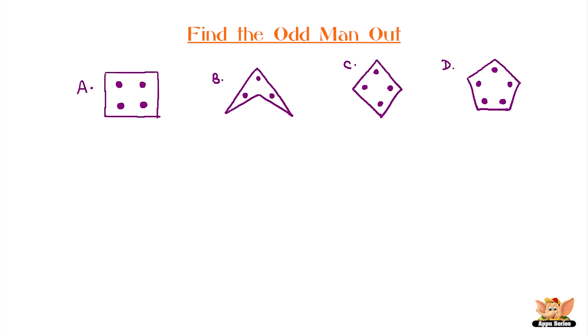The odd one is B. In the other figures, the number of dots is equal to the number of sides in the polygon.